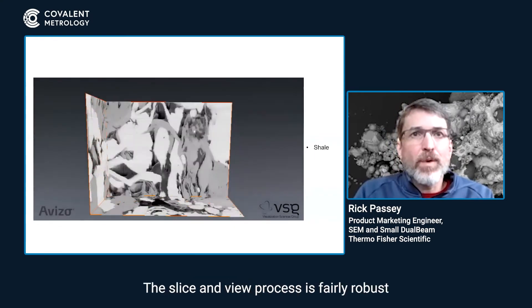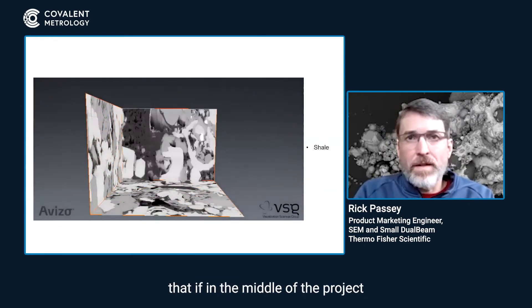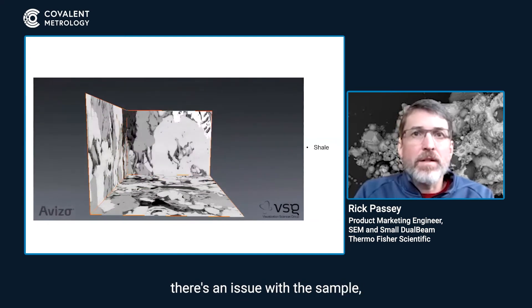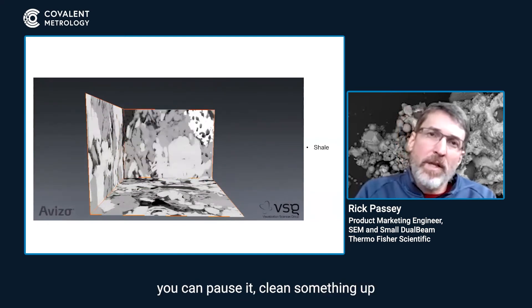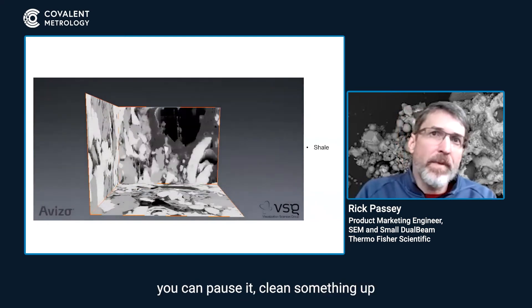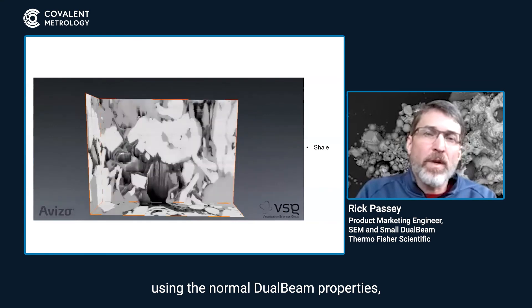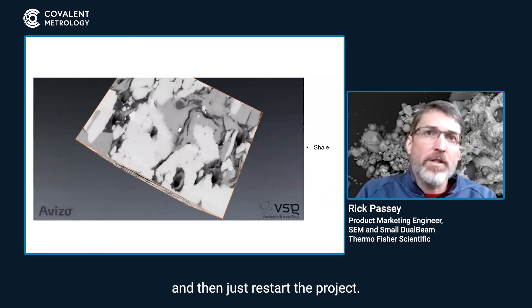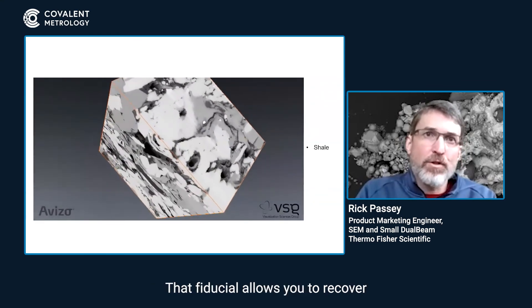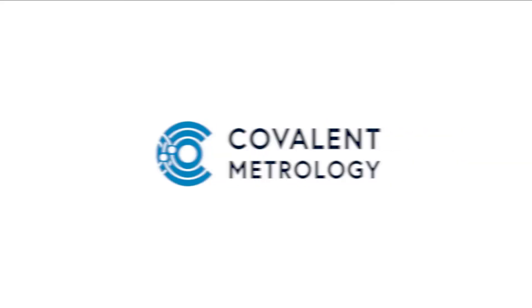The slice and view process is fairly robust — if in the middle of the project there's an issue with the sample, you can pause it, clean something up using the normal dual beam properties, and then just restart the project. That fiducial allows you to recover these projects very easily.